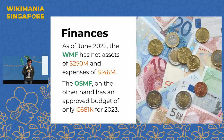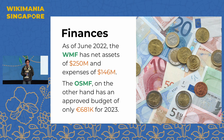Regarding finances: as of June 2022, the Wikimedia Foundation had net assets of $250 million and expenses of $146 million. However, the OpenStreetMap Foundation only uses a very small fraction of that — as of 2023, its approved budget is less than 1 million euros. Because of this big discrepancy, there are different views on how to fund projects, and there is actually a vocal section in the OpenStreetMap community that does not want OpenStreetMap to become as large as the Wikimedia Foundation.